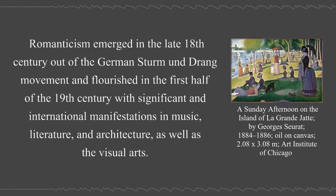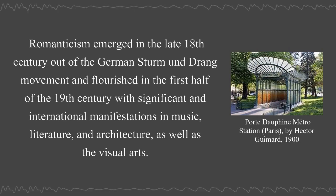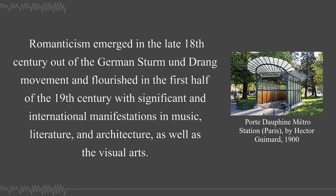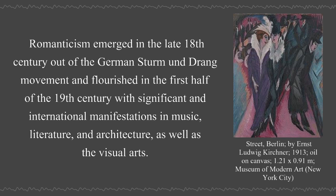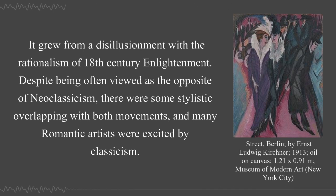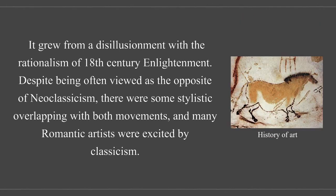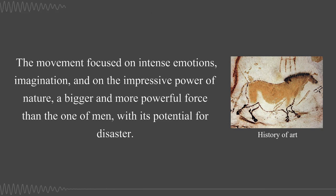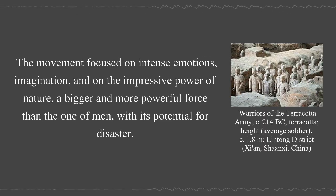Romanticism emerged in the late 18th century out of the German Sturm und Drang movement, and flourished in the first half of the 19th century with significant international manifestations in music, literature, and architecture, as well as the visual arts. It grew from a disillusionment with the rationalism of 18th century Enlightenment. Despite being often viewed as the opposite of Neoclassicism, there were some stylistic overlappings, and many Romantic artists were excited by classicism.